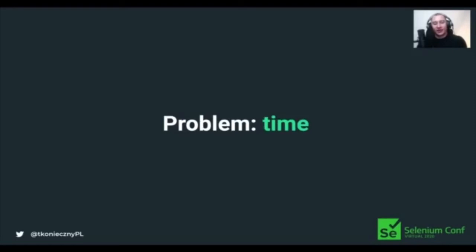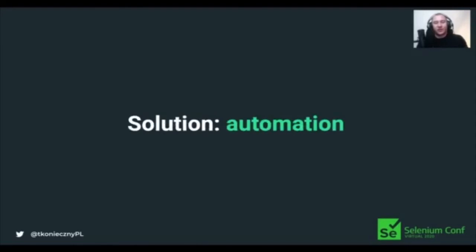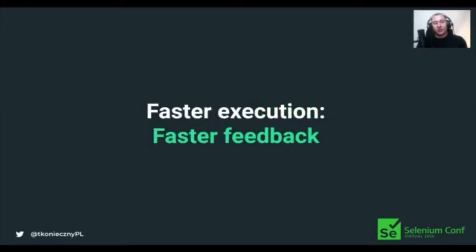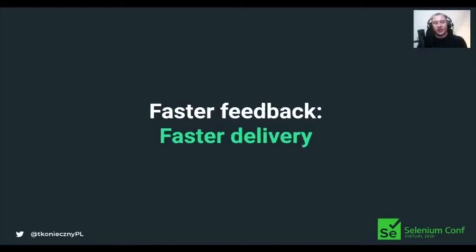It's also about feedback time, which may be even more important - how long we will have to wait to get results. The solution is automation. If we automate something repetitive, we can save time on that repetitive execution. Automated tests can be way faster than manual ones, improving the feedback loop. Faster execution means faster feedback; if we know about possible problems earlier in the development process, we get feedback earlier, which means faster delivery, the ability to fix bugs sooner, and better predictability.